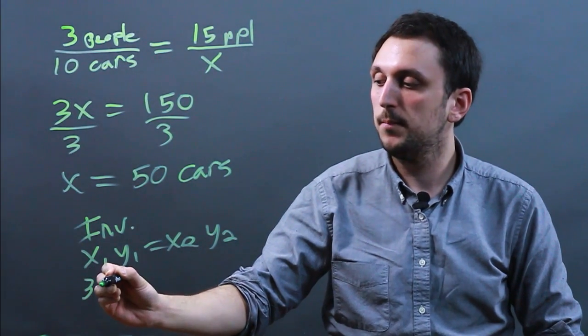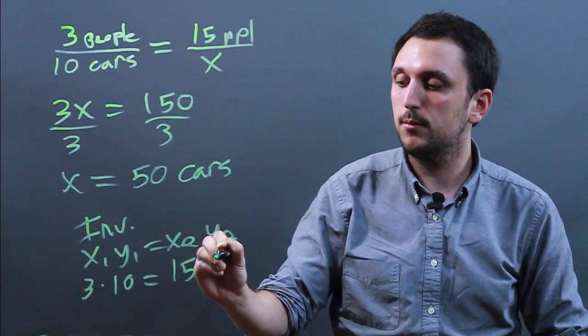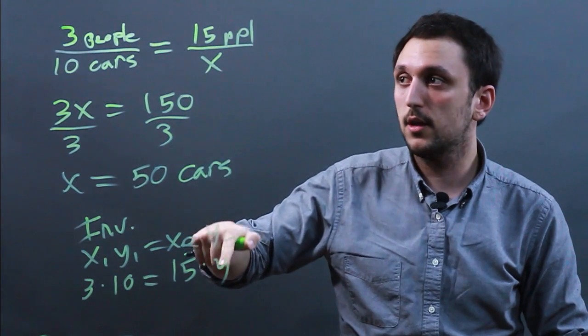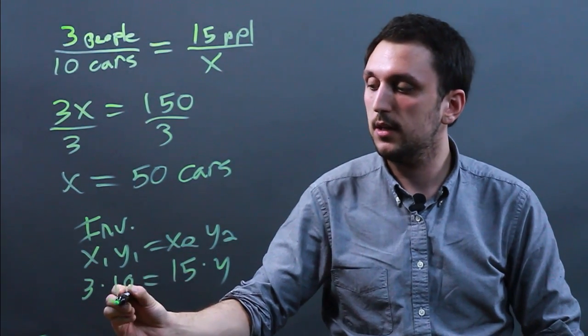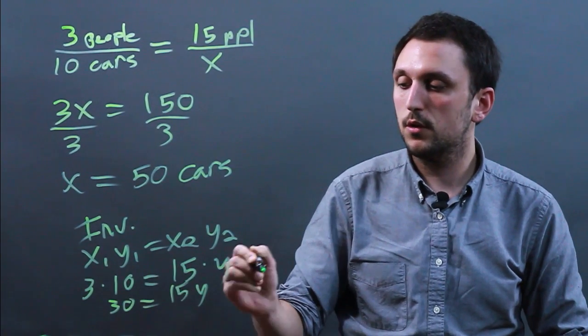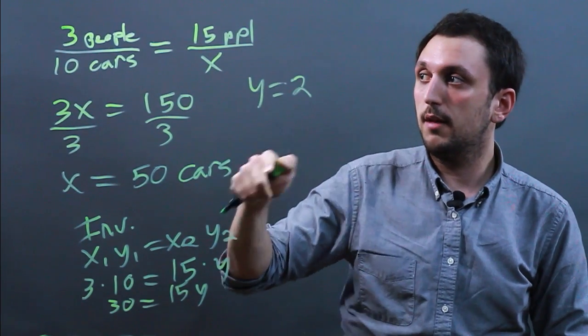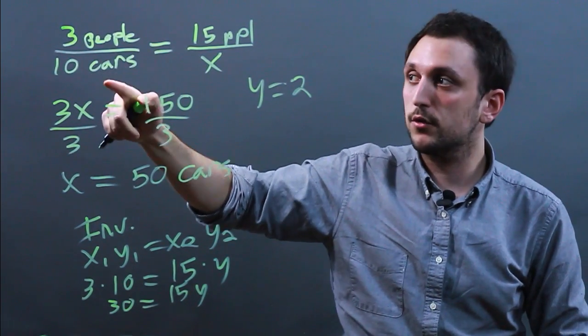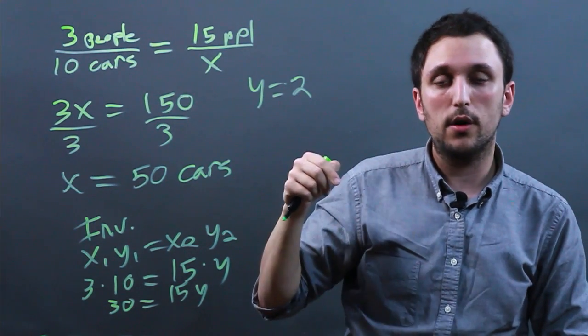we would say 3 times 10 equals 15 times y. We would call it y in this case, because we are calling the cars the y term. So 3 times 10 equals 30 equals 15y. So y is going to equal 2. If the number of people to cars are inversely proportional, if there's 3 people for 10 cars, then 15 people will have 2 cars.